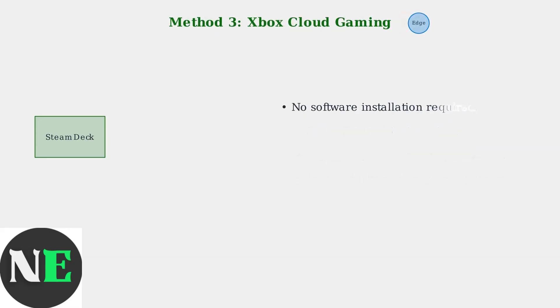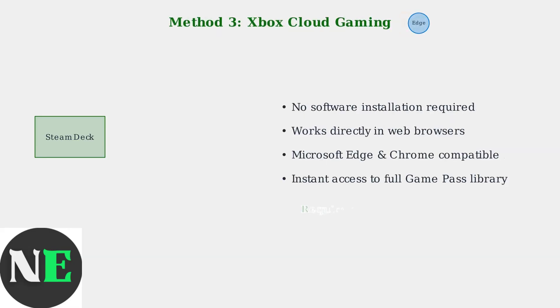The third method is Xbox Cloud Gaming, which requires no additional software installation. You can access Game Pass games directly through web browsers like Microsoft Edge or Chrome, with instant access to the full library.